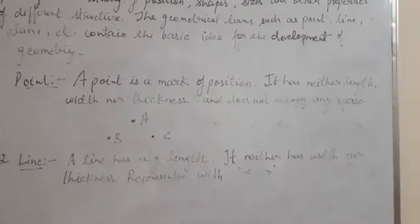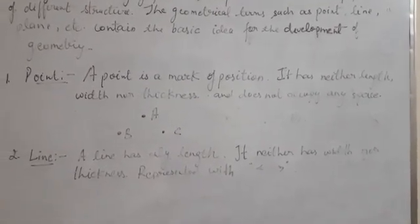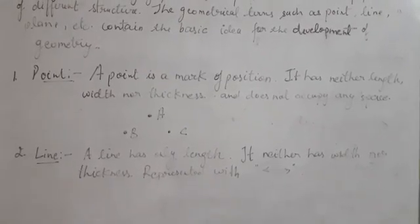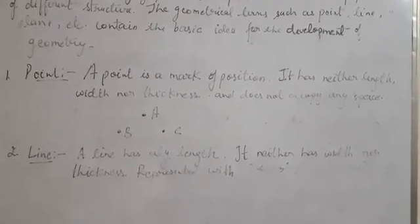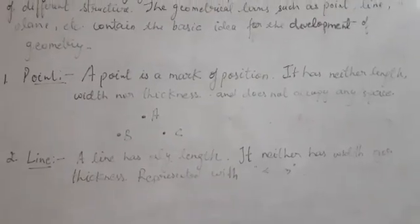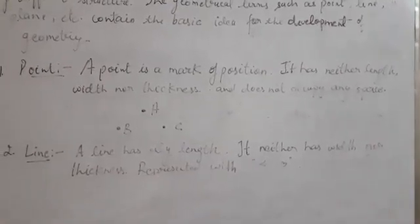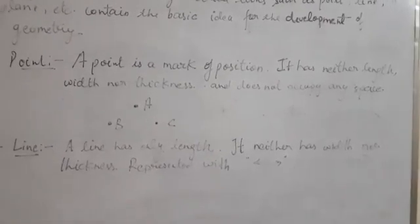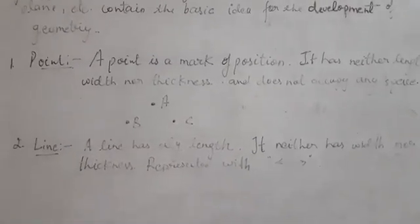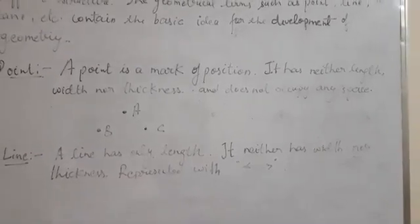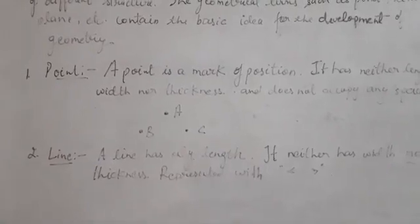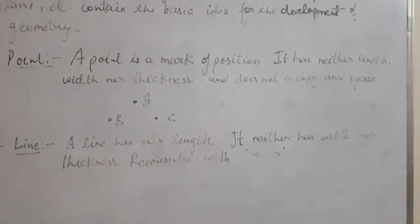For example, if I ask you where is the fan, you will point towards the ceiling — you are just telling me about the position of that object. So, a point is a mark of position. It doesn't have any length, width, or thickness, and it does not occupy any space. It is represented with a dot only. We can name it point A, B, or C.